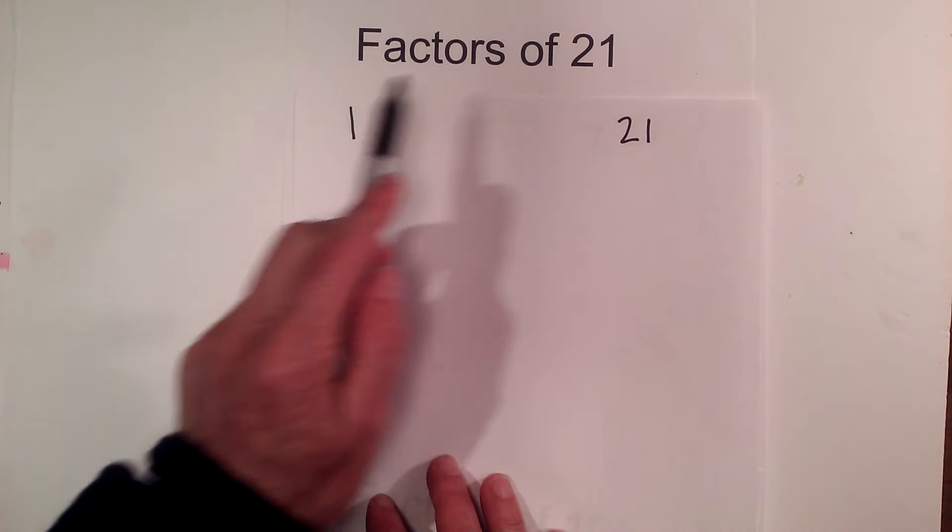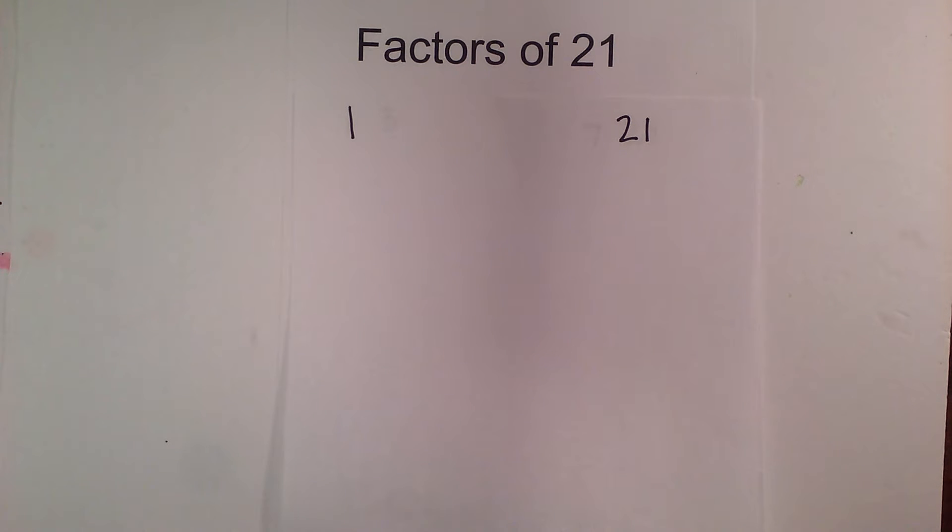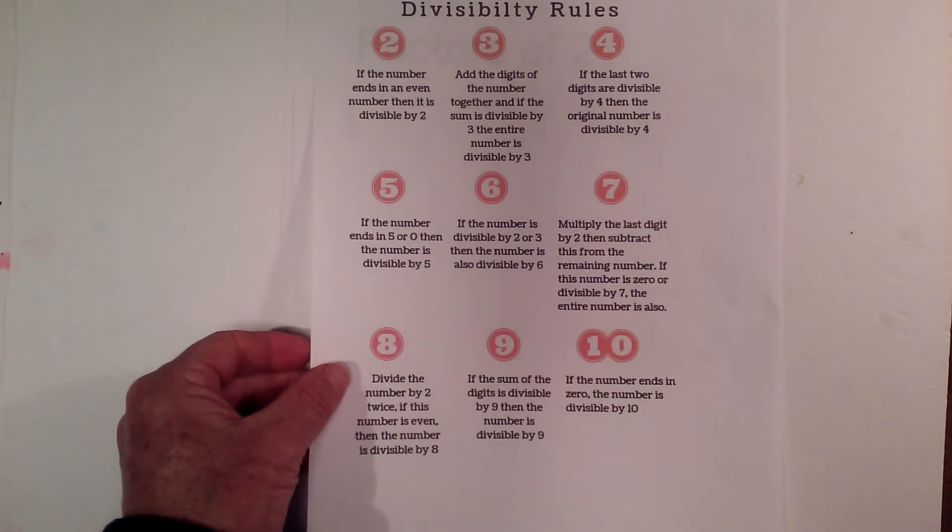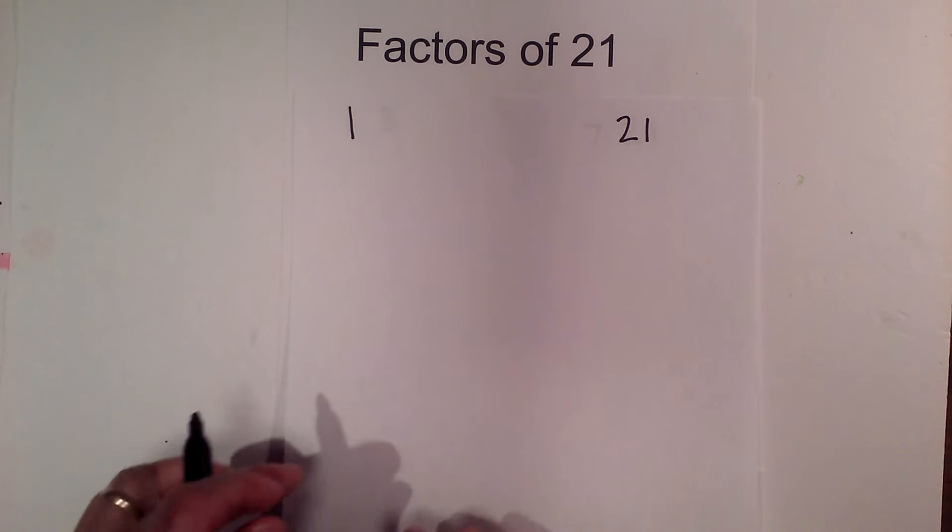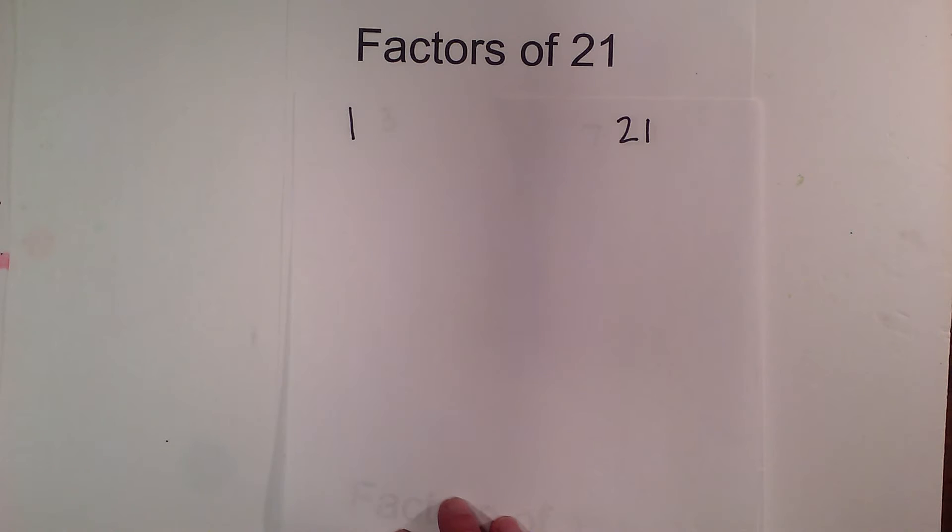Then I find the numbers in between that divide into it, so let's start with 2. I'm also using a divisibility rules chart like this, and it sometimes helps. I'll leave a link in the show notes if you think that will be helpful. So the next number is 2. Two will not divide into 21 because it does not end in zero or an even number.